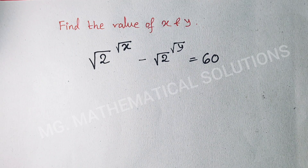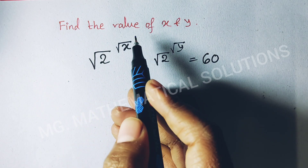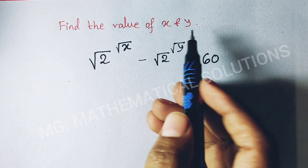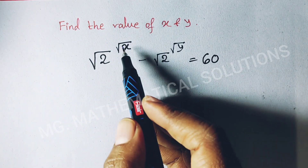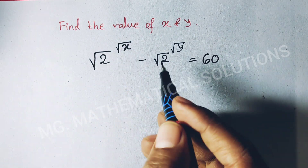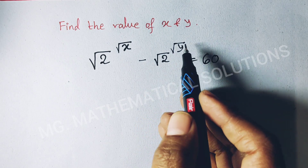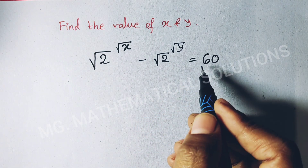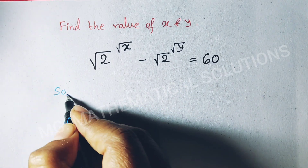Hi students, today I solve a nice math olympiad problem which is: find the value of x and y of the equation root 2 to the power root x minus root 2 to the power root y equal to 60. Let's see how to solve.